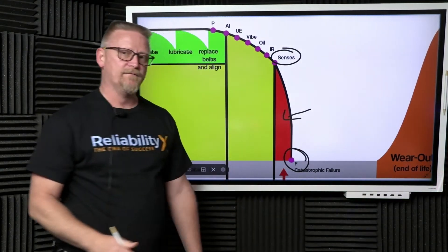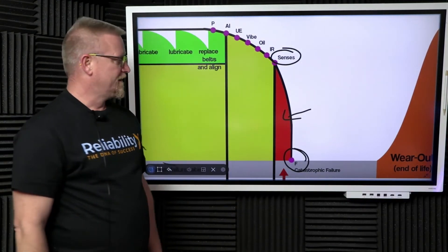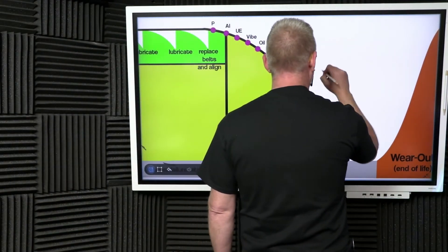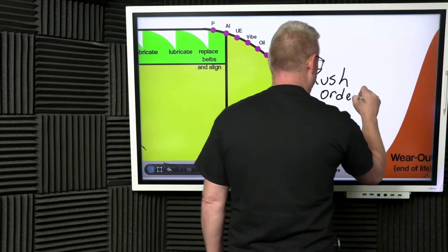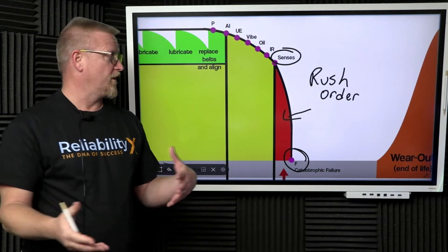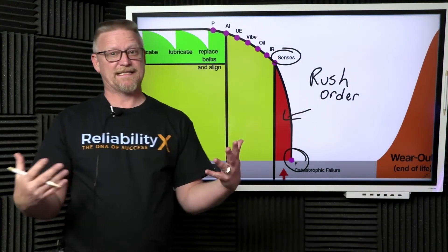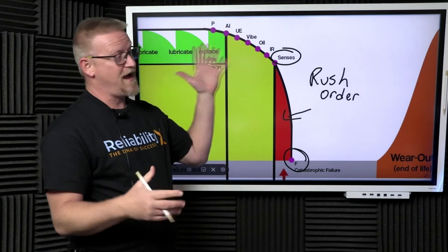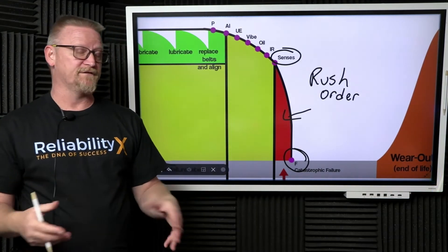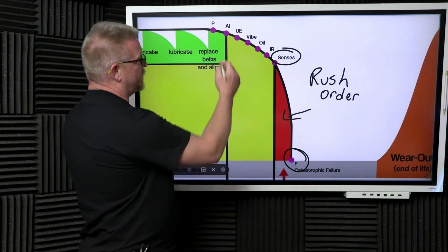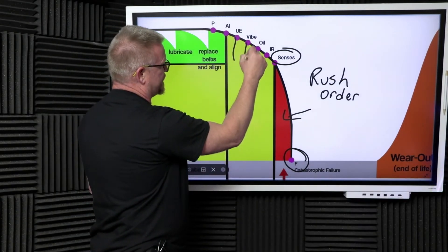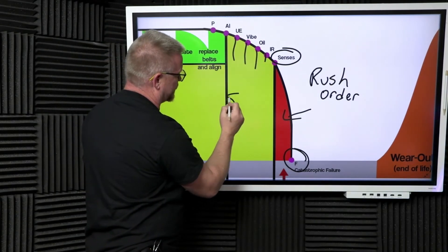This means we are rushing in parts. If your planner is constantly rush ordering parts and things like that, you're living in this space and probably not utilizing predictive technologies to its fullest extent.